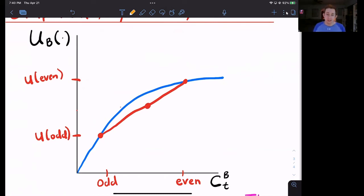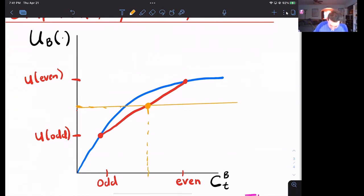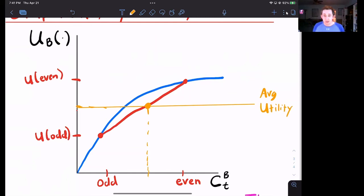Because we know that there is the same number of odd and even periods in an infinite lifetime, so his average utility or his expected utility is going to be this yellow dot, which is exactly in between the odd and even. So here is the average, which means that this right here, I'll draw this in a solid line. That probably won't be straight, but that's okay. So this is Bill's average utility. So this is the average utility that Bill gets if he is not smoothing consumption.